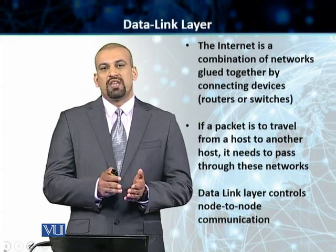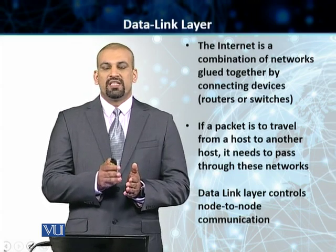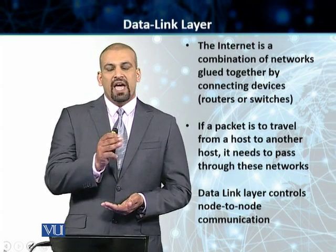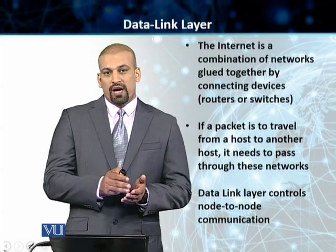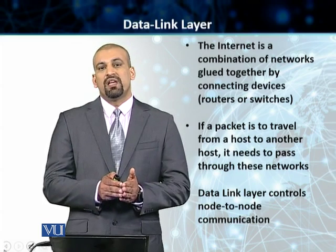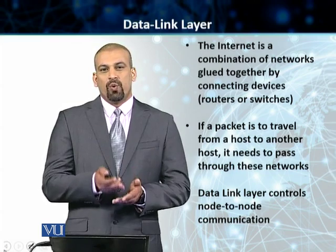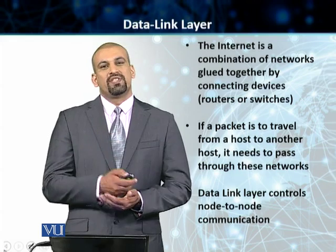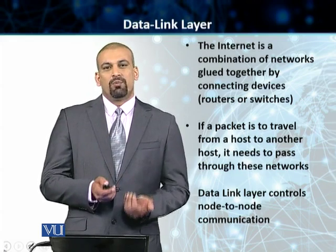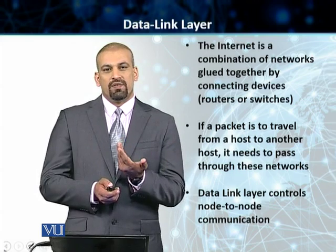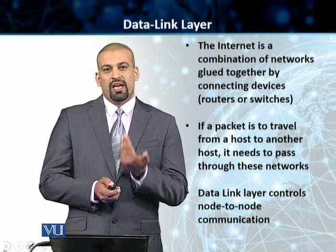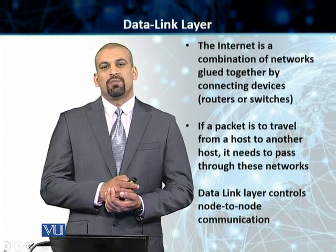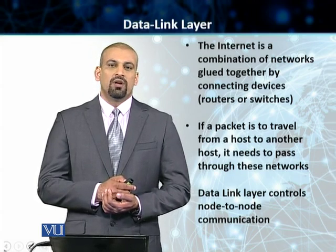Before we move on, you need to understand that the data link layer actually exists between layer 1 and layer 3 — between the physical layer and the network layer. Going back to the TCP/IP layer concept, the data link layer provides services to the network layer and takes services from the physical layer. The physical layer provides services to the data link layer, which in turn provides services to layer 3 of the TCP/IP protocol suite.